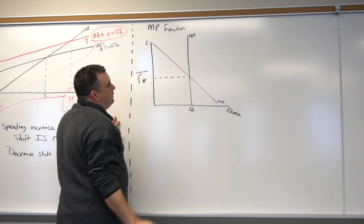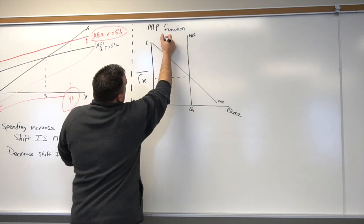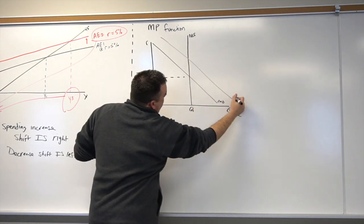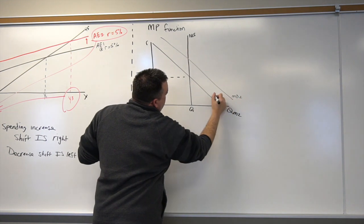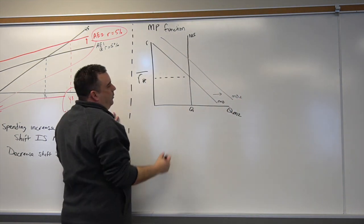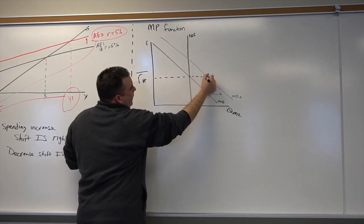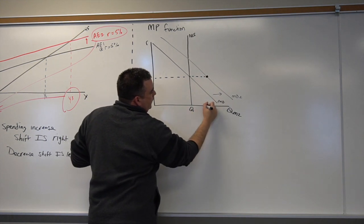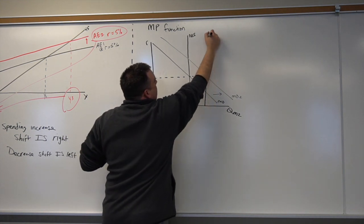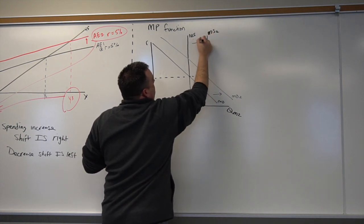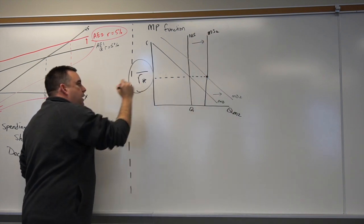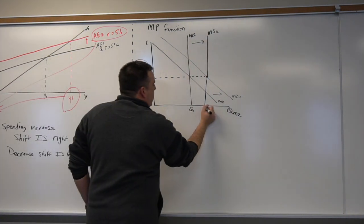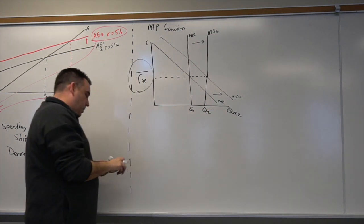Well, what happens if something changes? If money demand goes up to MD2, well, the Federal Reserve can say, nope, we're going to keep it constant. We talked about this, we did this graph. They can shift money supply to MS2, and R stays at R bar.